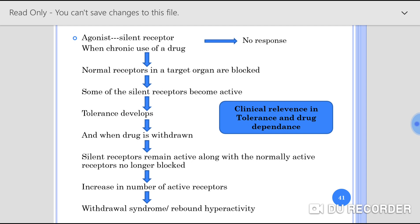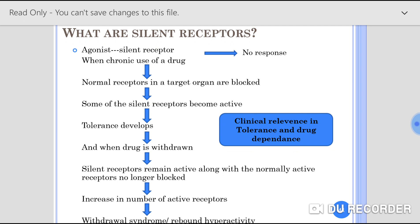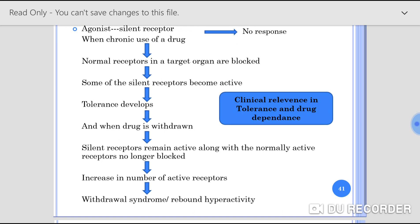This is the clinical relevance in drug tolerance and drug dependence. When an agonist is combined with a silent receptor there is no response. But with longer use, normal receptors in target organs are blocked, silent receptors become active, tolerance develops, and upon withdrawal the increase in active receptors leads to withdrawal syndromes, rebound hyperactivity, and super sensitivity of receptors.